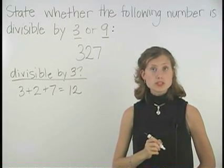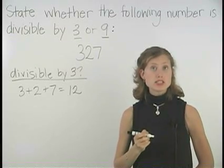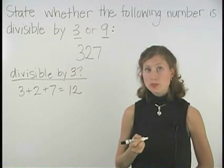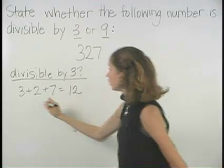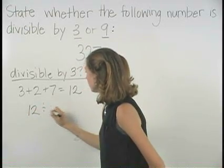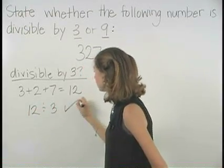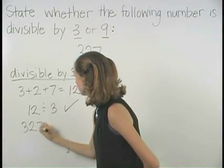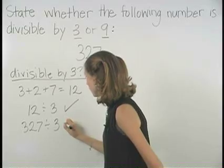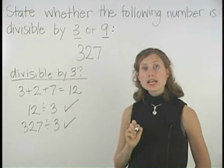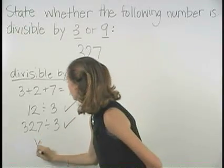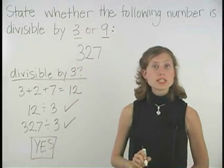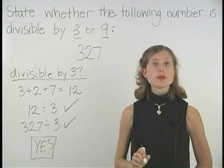The divisibility rules tell us that if the sum of the digits is divisible by 3, then the number is also divisible by 3, so since 12 is divisible by 3, 327 must also be divisible by 3. So our answer is yes, 327 is divisible by 3.